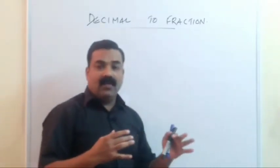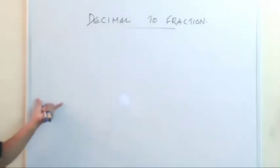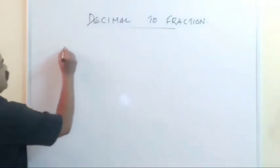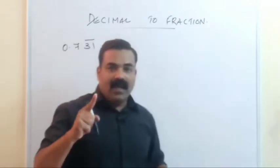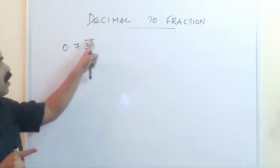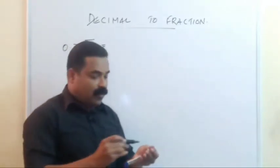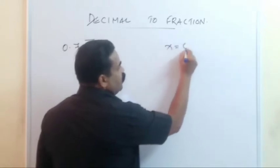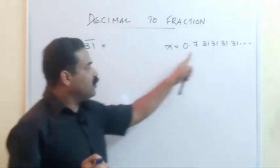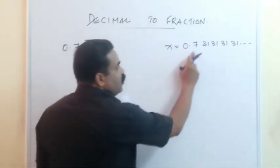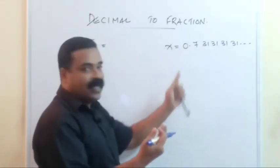Now let us see what happens if we have a decimal with three digits but the bar is only on two of them. For example, take 0.731 bar — bar is only on 3 and 1. Let us solve it using the school method first. We take x = 0.731313131 continuing, because only 31 repeats. There is one digit, 7, which is not repeating.